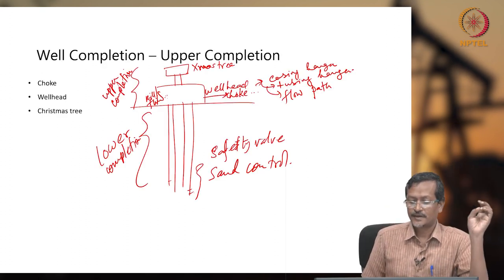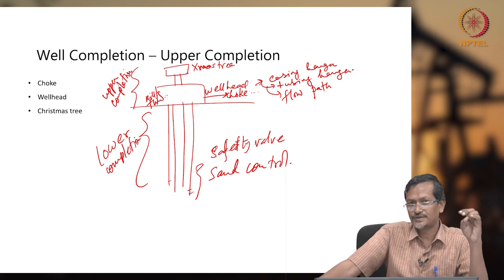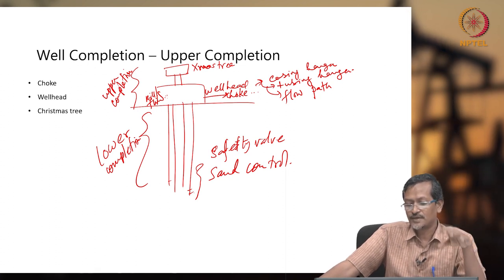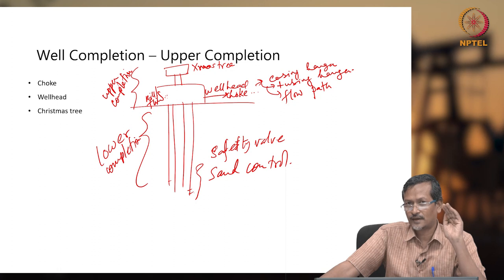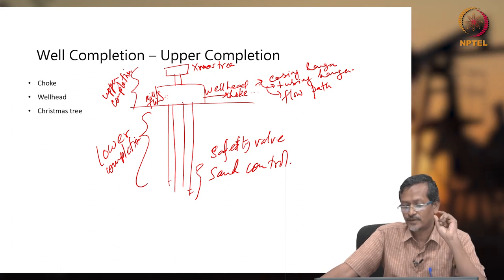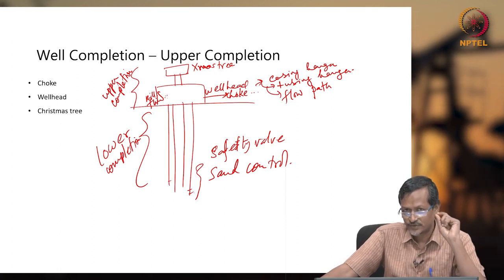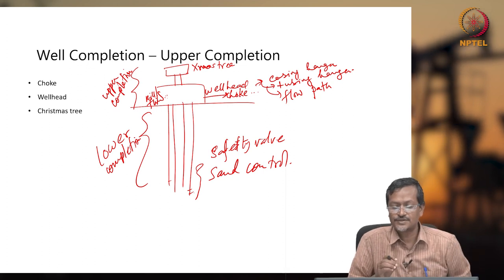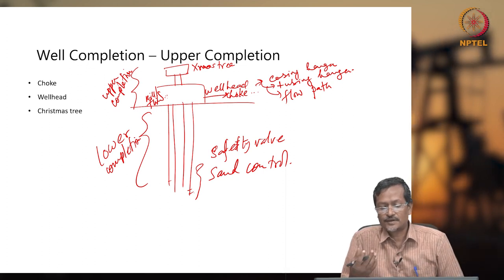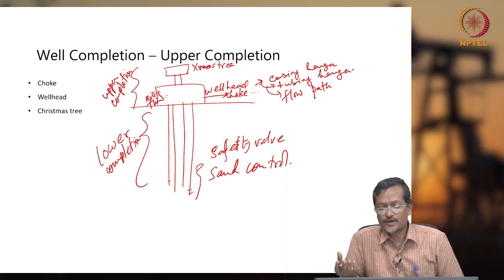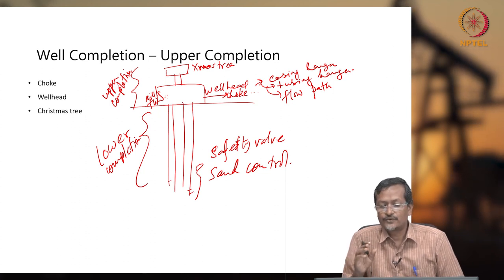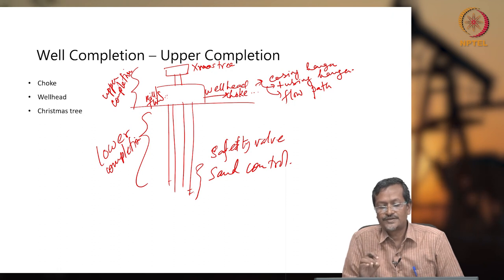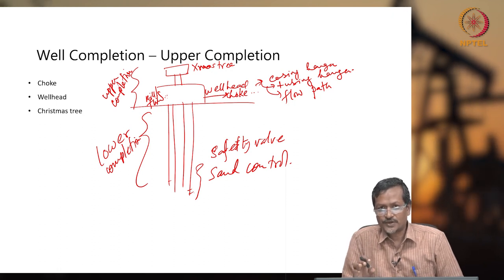Kill fluid accessibility means: if there is an issue in the wellbore, you inject very high density fluid into the wellbore so that oil and gas production will be stopped. Because if uncontrolled oil and gas come to the surface, that is dangerous — it is a combustible mixture and can create a blast or big fire. So if something is wrong, you inject kill fluid to stop the production.